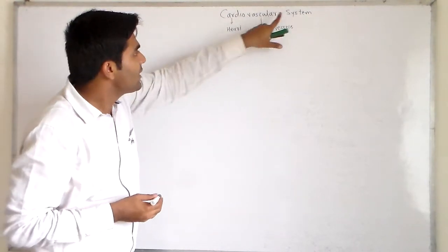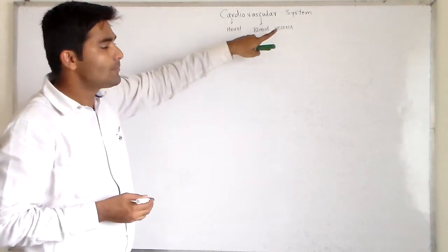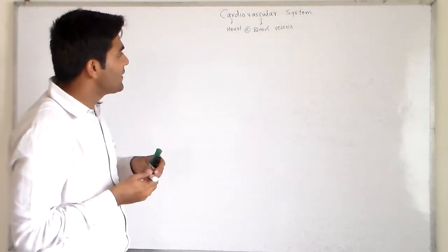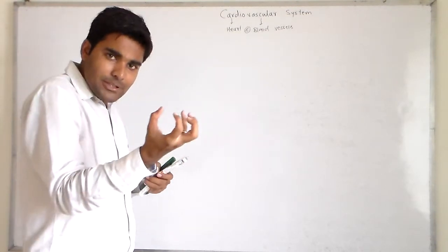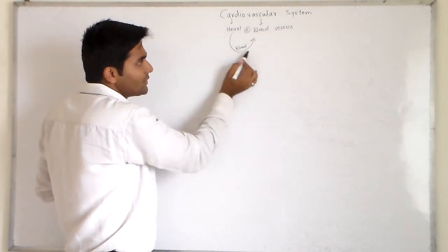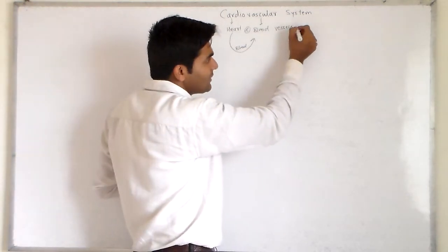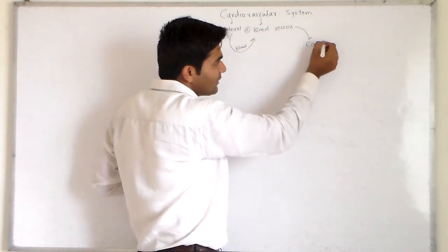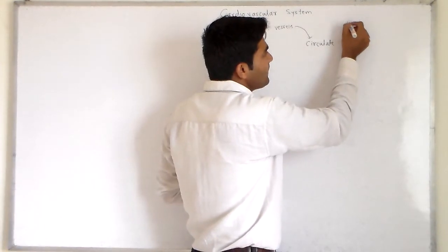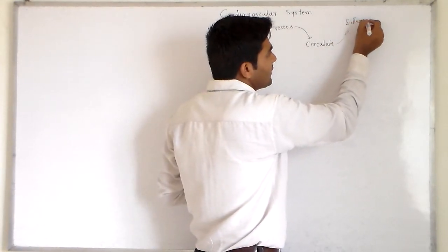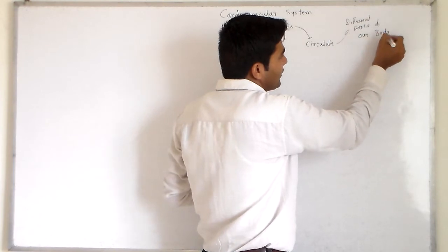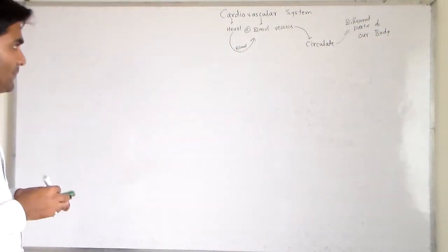It is the system comprised of heart and blood vessels, known as cardiovascular system. The function of heart is to pump the blood into blood vessels. These blood vessels circulate the blood to different parts of our body.